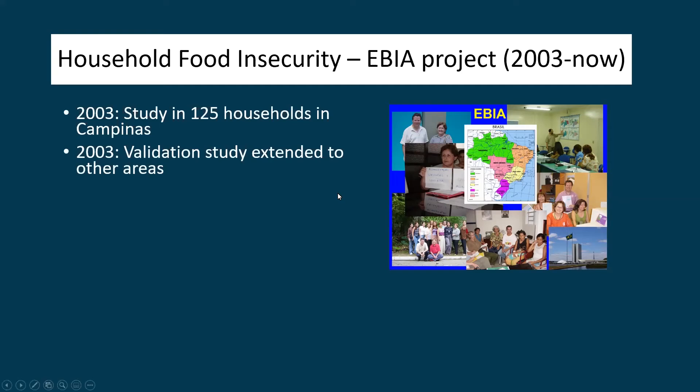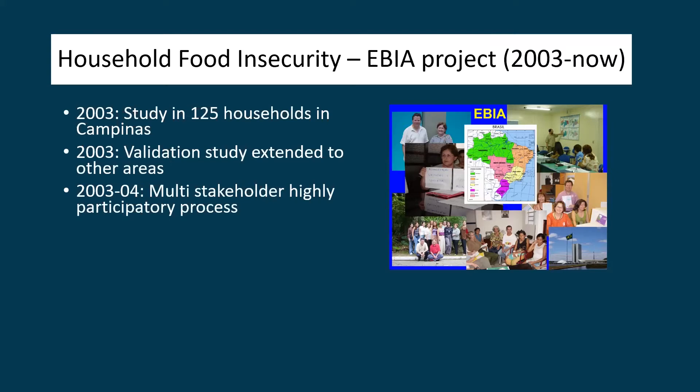So we approached the government and were able to get a little bit of funding to start with a very small study in 125 households in Campinas to see if the adaptation of the US household food security survey module to the context of Brazil could work, at least first starting with a pilot study. In 2003, we conducted the validation in four additional cities and subsequently in numerous urban and rural areas in the country. Everything was guided through a very inclusive, multi-stakeholder, highly participatory process. By 2004, just a little bit over a year, we persuaded the Brazilian government to invest over a million dollars in collecting data in 130,000 households in the whole country.